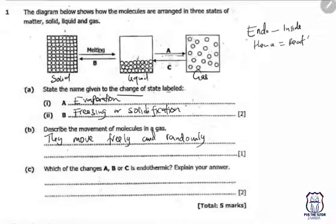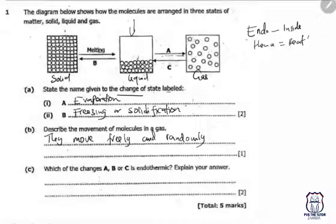Looking at change A: A is changing from liquid to gas. For a liquid to change to gas, heat must be applied and absorbed, so A is endothermic. Change B is moving from liquid to solid — heat is not absorbed but released so particles come together. The same applies to C. Therefore, the answer is A.